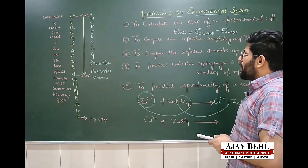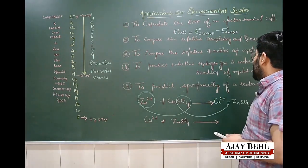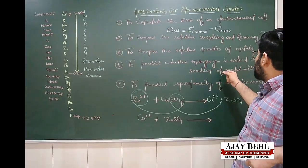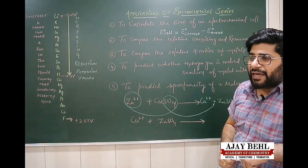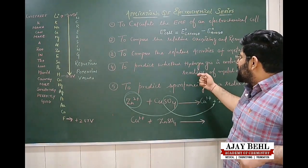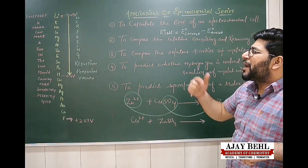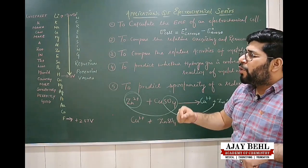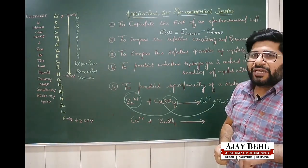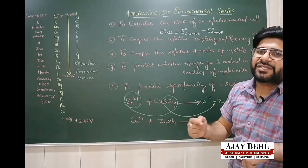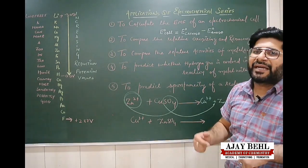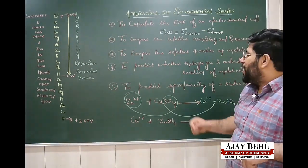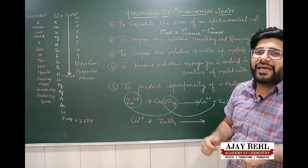The fourth application is to predict whether hydrogen gas will be evolved when a metal reacts with acid. Elements that have a higher oxidation potential than hydrogen will have a tendency to get oxidized in comparison to hydrogen, and these elements will evolve hydrogen gas when reacted with acids.